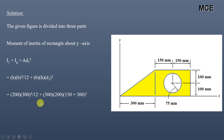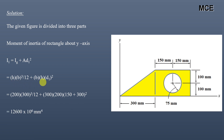The height of this rectangle is 200 mm, the width is 300 mm, and the distance between the centroid of this rectangle and the y-axis is 150 mm plus 300 mm. Putting these values into the equation, we get the moment of inertia of this rectangle about the y-axis as 12600 × 10⁶ mm⁴.